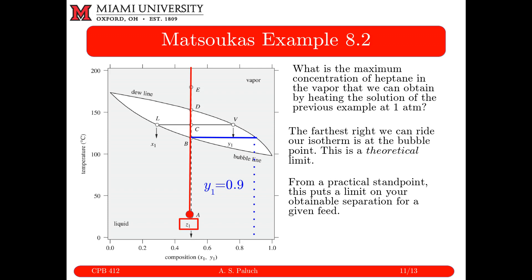The practical significance is: given this mixture, the maximum y achievable from a flash drum is the bubble-point value, and the minimum y equals z at the dew point. Any composition between those two extremes is achievable, but higher y comes at the cost of lower vapor flow rate.